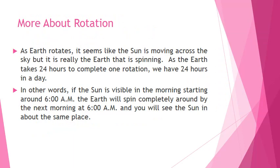As Earth rotates, it seems like the Sun is moving across the sky, but it is really the Earth that is spinning. As the Earth takes 24 hours to complete one rotation, we have 24 hours in a day. In other words, if the Sun is visible in the morning starting around 6 AM, the Earth will spin completely around by the next morning at 6 AM and you will see the Sun in about the same place.